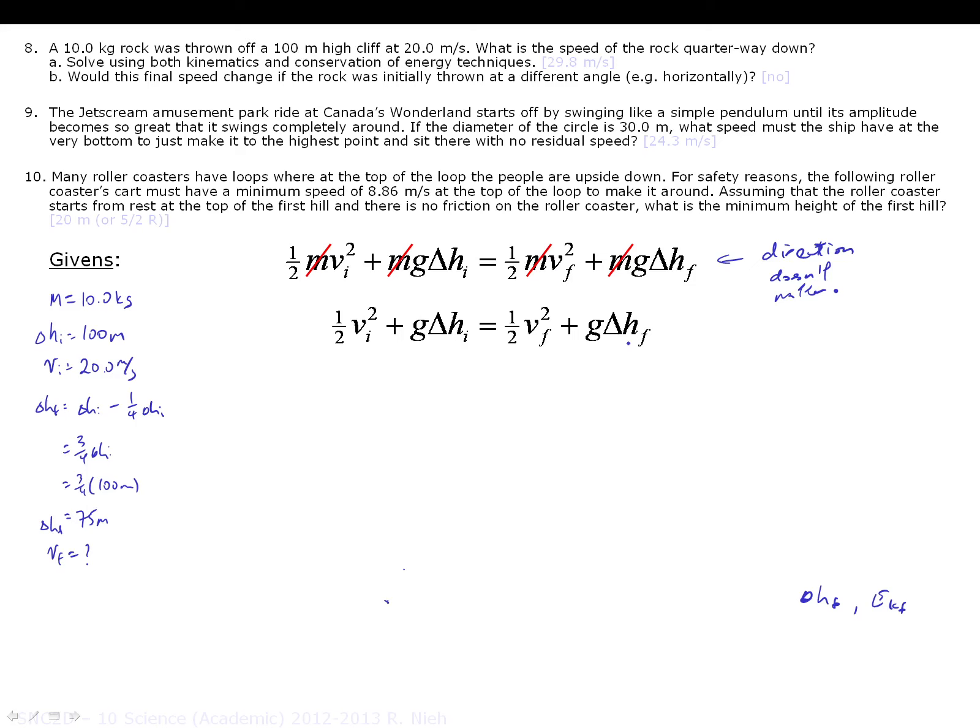So with that in mind, we can continue with this problem. Since we're solving for Vf, we'll just quickly rearrange for it. One thing I like to do is I like to just double everything, just to get rid of the one half. So I have Vi squared plus 2g delta Hi equals Vf squared plus 2g delta Hf, as it's a lot cleaner and faster to solve for my Vf. So my Vf equals Vi squared plus 2g delta Hi minus 2g delta Hf. And optionally, if you really want to, you could factor out the 2g so you have your Hi minus Hf.